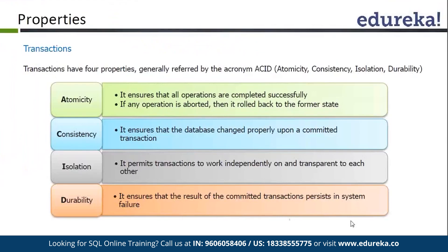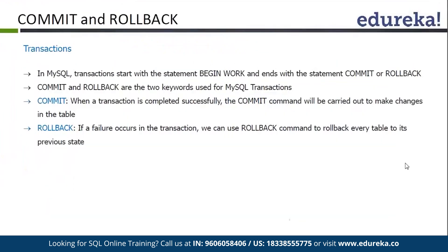Next is Isolation. Isolation simply means that each transaction is independent of other transactions. No transaction can overlap with any other transaction — it is isolated from other transactions. Durability simply means once all the transactions are executed and we have committed them using the commit keyword, all the results will be committed and will remain permanently in our database server. This is called durability. This is the ACID principle that we follow in transactions.